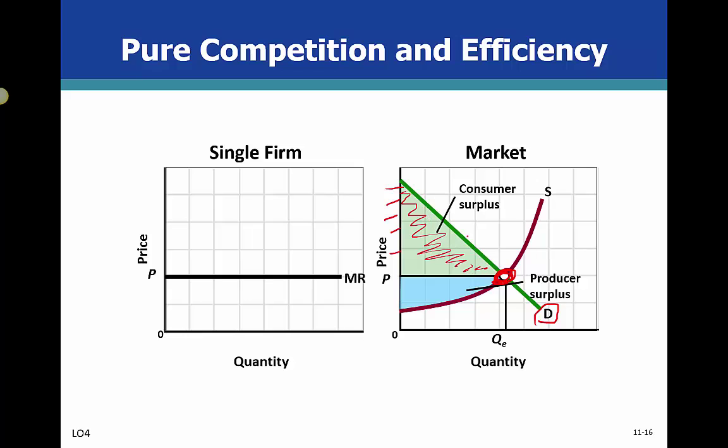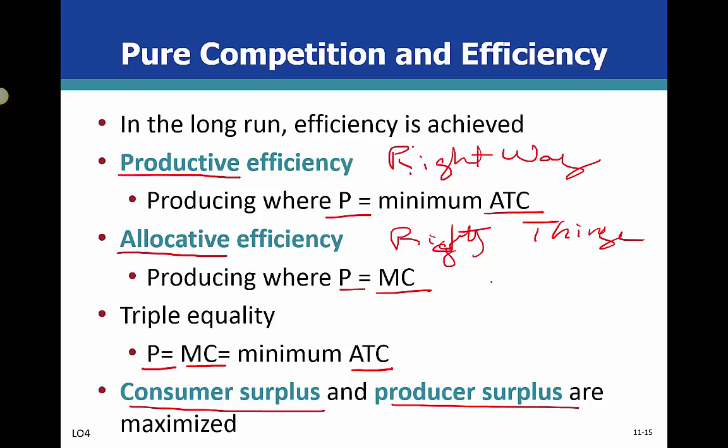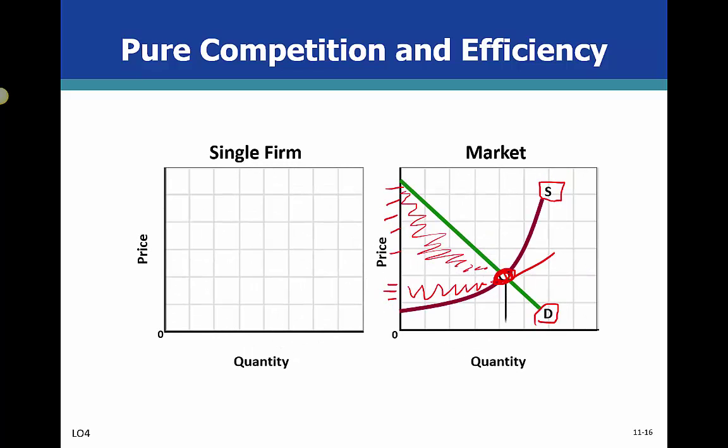The same thing applies to producers on the supply curve. This is the producer or supply surplus, and that's where the producers along these lines are saying, 'We will take a lower price for our product,' but because equilibrium is here, they're able to say, 'We're getting more than we need or we're willing to accept for our product, so that's bonus profit for us.' When you hit your triple equilibrium, then you're at a point where producers and suppliers are equally happy with the market situation.